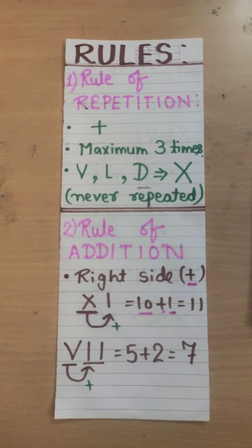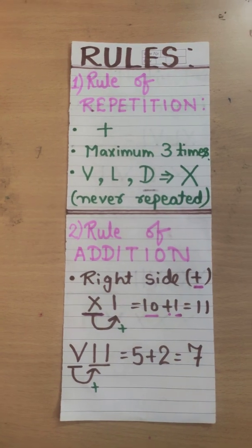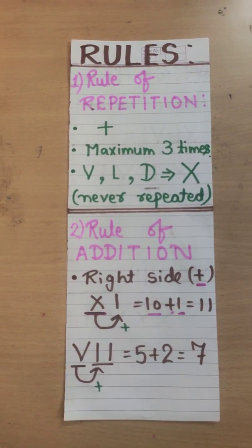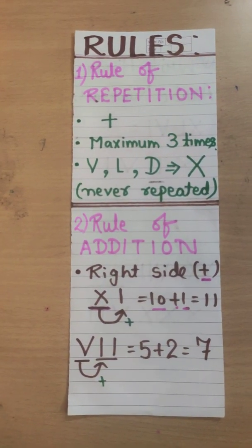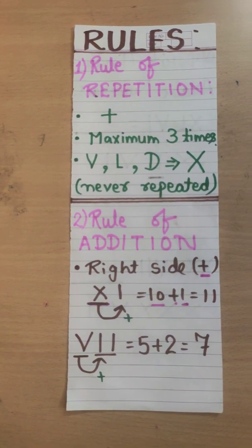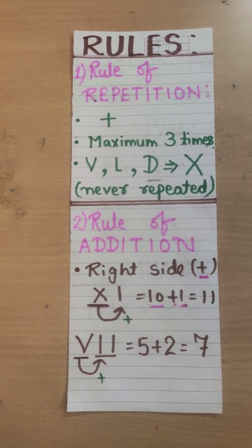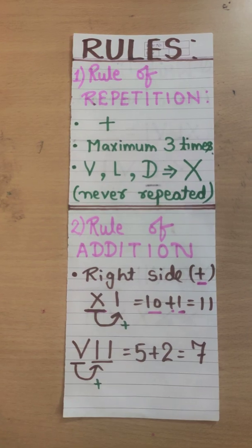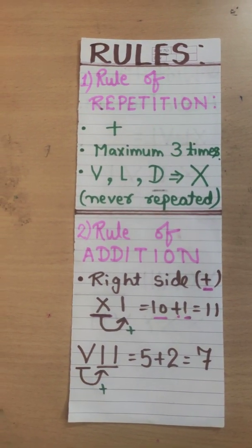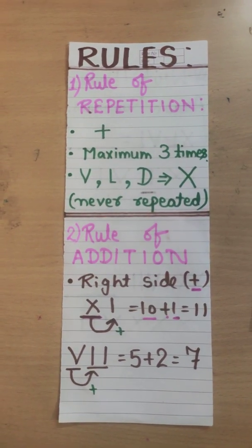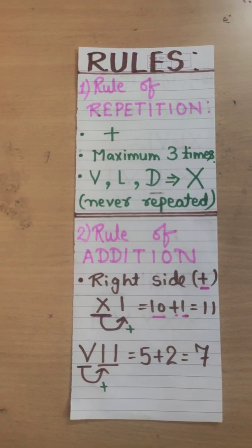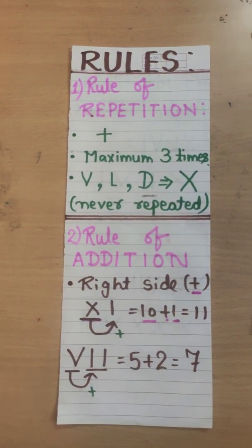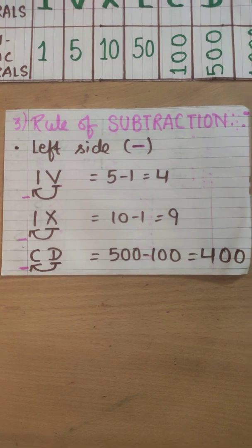10 plus 1 which means 11. Let's see the next one VII. Let's find the greater symbol out of these 3. V, I, I. The greater one is V. And the rest of the symbols are in right side. It means we are here to add it. 5 plus 2 which means 7. Whenever the symbol is in right side, we are here to add it.